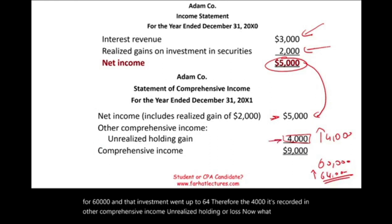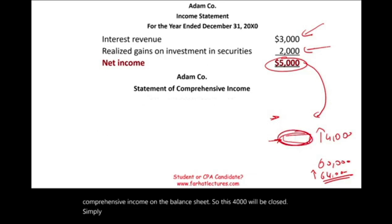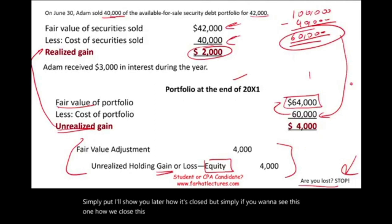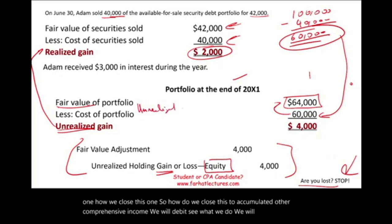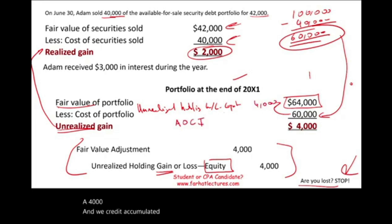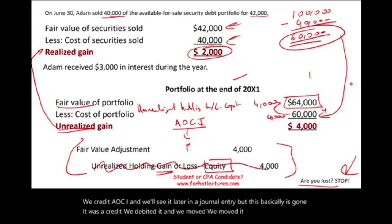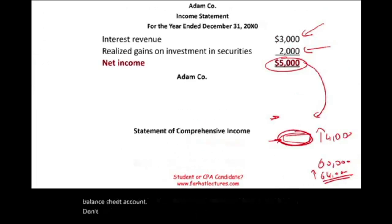The $4,000 unrealized holding gain gets closed to Accumulated Other Comprehensive Income (AOCI) on the balance sheet. The closing entry: debit Unrealized Holding Gain/Loss — Equity $4,000, credit Accumulated Other Comprehensive Income $4,000. So the unrealized holding gain account goes to zero and the $4,000 moves to AOCI, which is a balance sheet account.